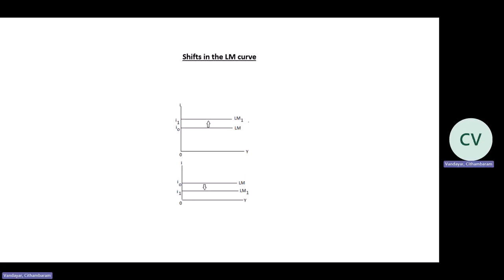Looking at the top diagram, there's a shift in the ILM curve from ILM to ILM1. As your interest rate increases, your ILM curve shifts in a parallel upward shift. A shift in the ILM curve occurs when the central bank decides to change the interest rate. An increase in the interest rate will cause a parallel upward shift in the ILM curve — an increase from I0 to I1 causes a parallel upward shift from ILM to ILM1. Conversely, a decrease in the interest rate from I0 to I1 will cause a parallel downward shift in the ILM curve.